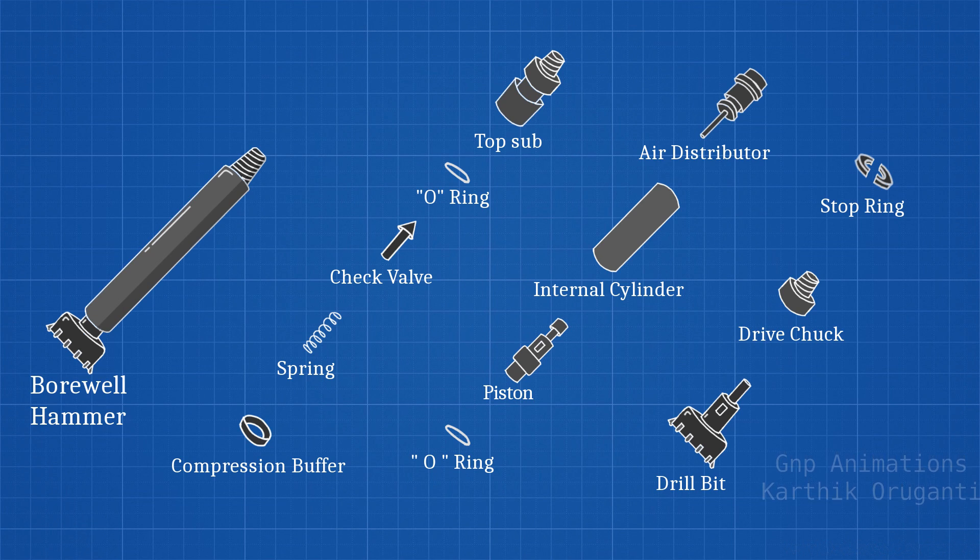The borewell hammer works with air pressure that is sent through strong iron pipes from the compressor. Inside the hammer, it mainly consists of a top sub, o-ring, check valve, spring, compression buffer, air distributor, internal cylinder, piston, another o-ring, stop ring, check drive, and finally the drill bit. These parts work together to drill a hole into the ground.